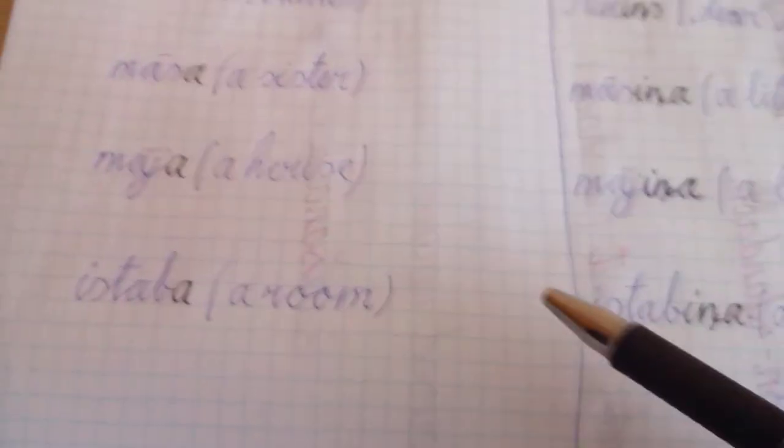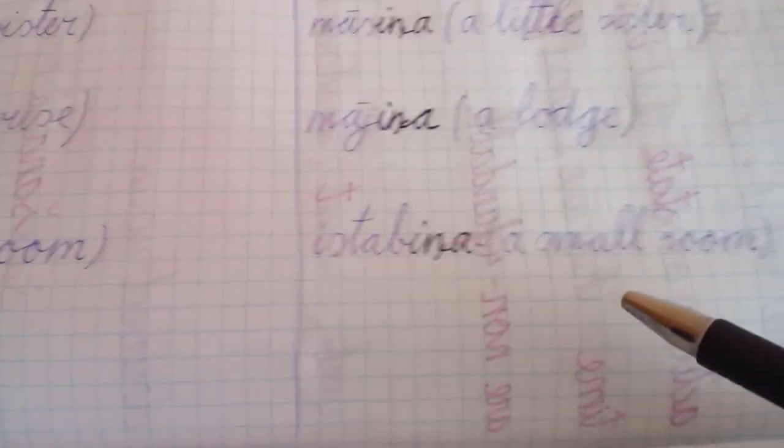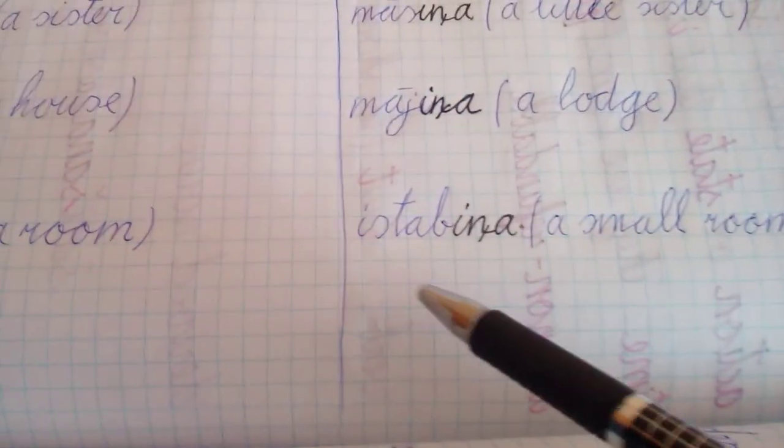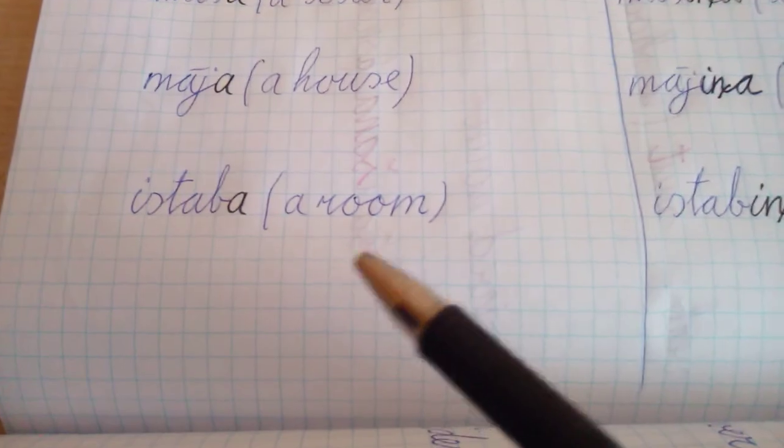So nouns become -iņš or -iņa. Istaba, a room. Istabiņa, a small room. It's feminine form, istabiņa. And istaba also is feminine form.